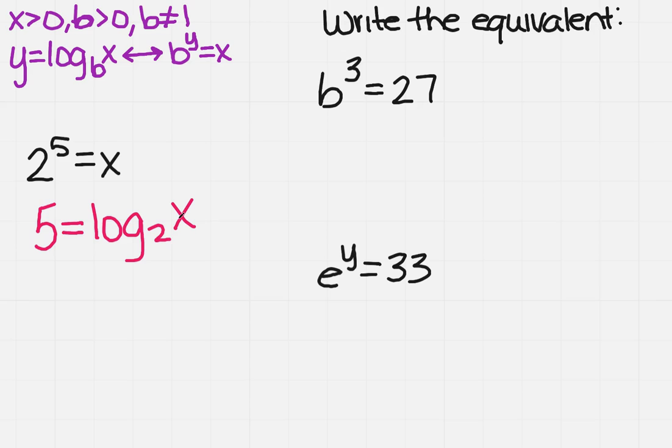So if I do the B cubed equals 27, then whatever power it's raised to, so that's going to be 3, equals the log. This time I only have a B for my base, so I have B, and then I have a 27.